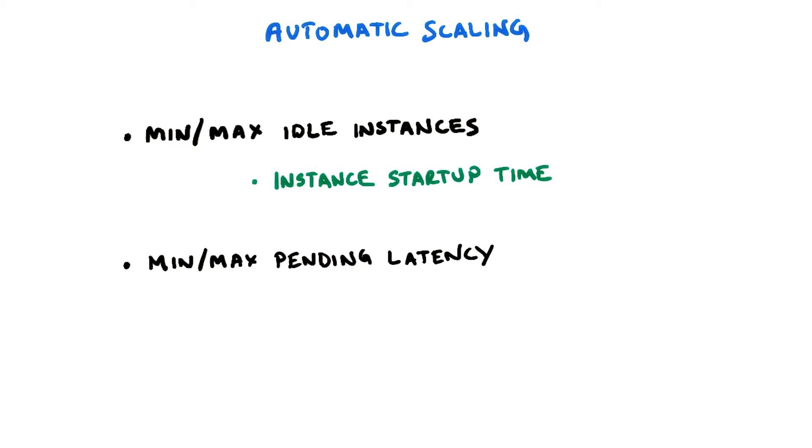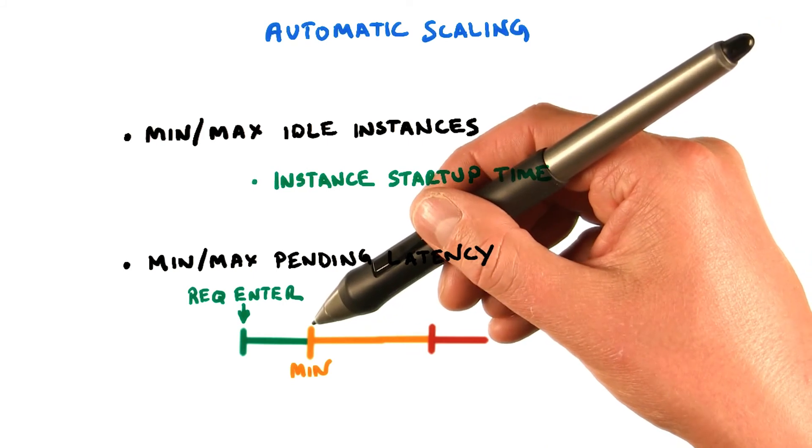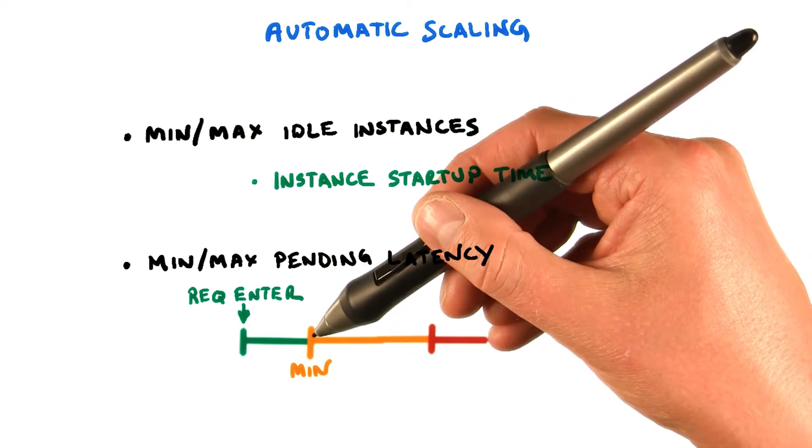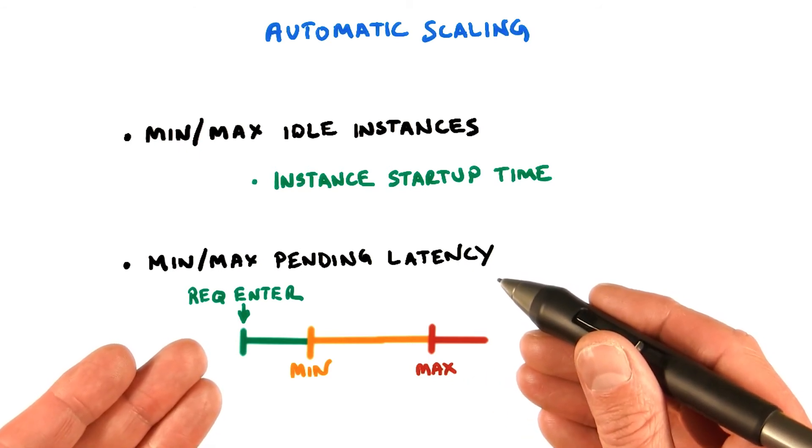Let's now look at latency, where you can specify the minimum and maximum pending latency allowed for requests. These parameters work as follows. So let's say a request comes into your application, right here, and there is no instance available to process it. Then it is put in a wait queue. App Engine now has a decision to make when to scale up your application using more instances. Well, to begin with, it will wait for some time to see if any of the existing instances become available to process the request. This is called minimum pending latency. If this time passes, App Engine is considering starting a new instance to manage the request. And if the max pending latency time expires, then a new instance will be started for sure to manage the load. This is how App Engine performs a scale up of your application.